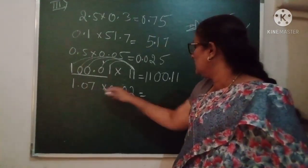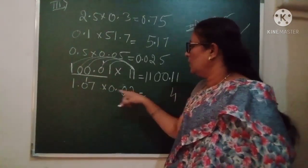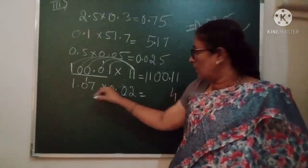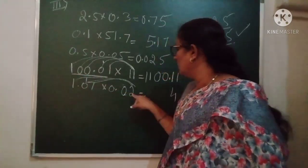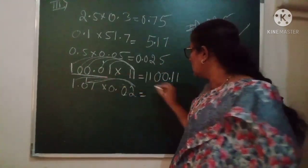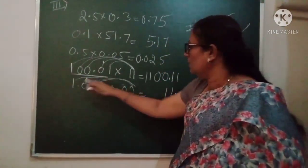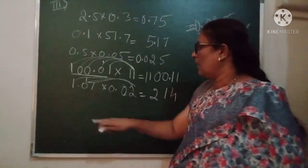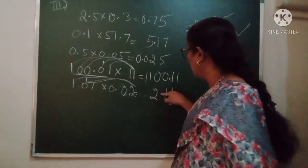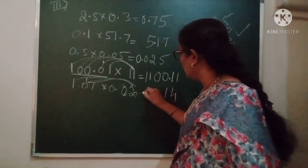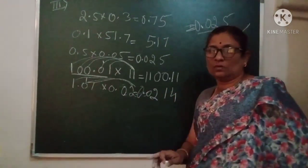Now look at this one, very simple. 2 × 7 is 14, carry 1. 2 × 0 is 0. Same thing I am following. Then 2 × 0 is 0 plus 1 is 1. Then 2 × 1 is 2. Now count the digits: 1, 2, 3, 4 we have. So 1, 2, 3, and 4. This way you have to do it.